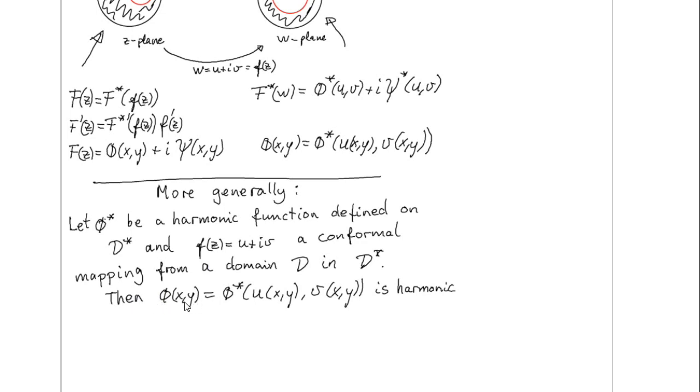Then it's possible to prove, and this is the result we are going to use, that the function phi of x, y defined by the function phi star. And in the first variable, we just use this function u of x, y, and in the second variable, we just use the function v of x, y. And this function is then harmonic.